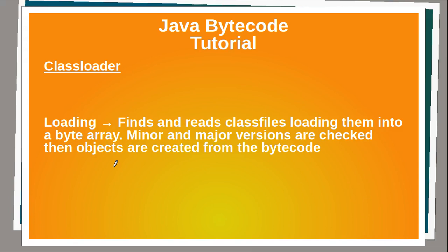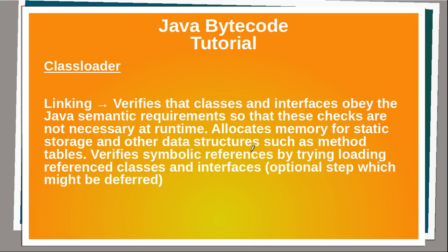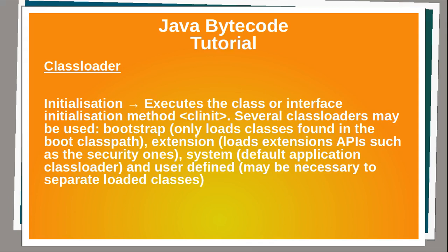Let's find out how the class loader turns your code into actual objects. During the loading phase, it finds and reads class files, loading them into a byte array. Minor and major versions are checked, then objects are created from the bytecode. During the linking phase, it verifies that classes and interfaces obey the Java semantic requirements, so that these checks are not necessary at runtime. It allocates memory for static storage and other data structures such as method tables, and verifies symbolic references by trying to load referenced classes and interfaces. That's an optional step. Then we need to start initializing things, executing the class or interface initialization method.